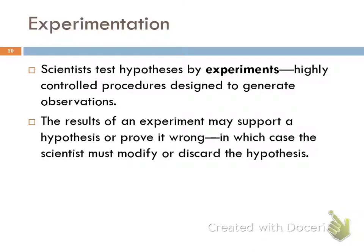The hypothesis needs to be tested, and so we do an experiment. Experiments are highly controlled procedures designed to generate observations. This is one of the reasons I like chemistry more than biology — living organisms are much harder to control. Humans are the worst kind of biological creature to control, so you can't control all the variables and that makes doing experiments very difficult. In chemistry, we don't really have that problem.